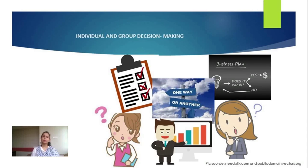When the manager makes the decision individually, it is known as an individual decision. On the other hand, when the manager makes decisions with the help of peers, superiors, or subordinates as a group, it is known as a group decision.